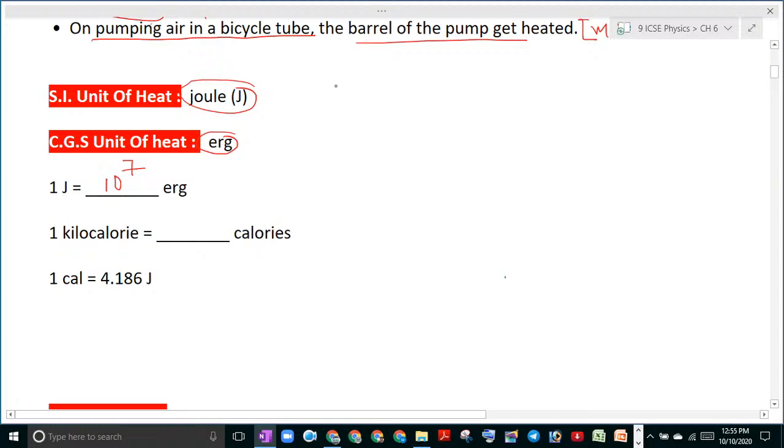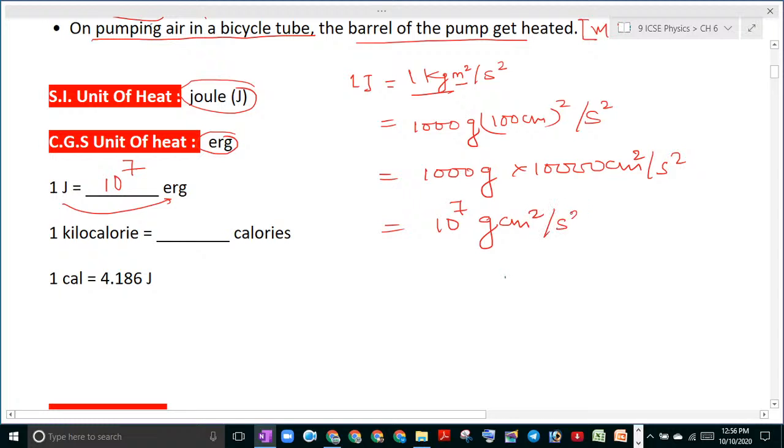Here we will discuss a few things. 1 joule we can write as 1 kg meter square per second square. We are just converting joule into erg. In 1 kg we can write 1000 grams. For meter square we can write 100 centimeter, whole square. And for second square as it is. So definitely what we will get is 1000 gram into 10,000 centimeter square per second square. Now if you arrange, you will get 10 to the power 7 gram centimeter square per second square. I hope this is clear to you.